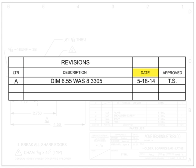The date and approved columns show when the change was made and who approved it, helping to track the history of changes to the blueprint. Other information sometimes contained in this area includes the zone where the change can be found, other signatures required to approve the change, and the serial number to indicate when the part change became effective.